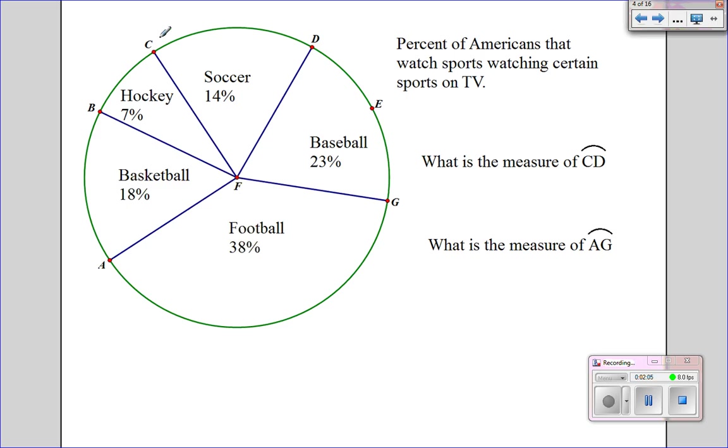And I want to know with this information what the measure of arc CD is. Now recall that a circle has 360 degrees. And this is 14%. So what I'm asking for is what's 14% of 360 degrees. And once again I chose 14 because I'm asking for CD. So that's from here to here which represents soccer. So 14% of 360. 14% could be written as .14. Of means multiply any time you see that word of. So you just type in .14 times 360. And you get 50.4 degrees.